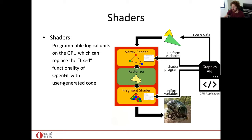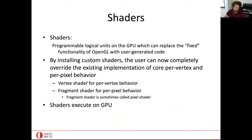Once pixels are determined, each pixel calls the fragment shader. This operates on pixel level, whereas the vertex shader operates on vertex level. We sometimes call the fragment shader a pixel shader because it operates on pixel level. At every pixel it calculates some color, which is the output. Transformations happen in the vertex shader at per-vertex level, and coloring happens in the fragment shader at pixel level.